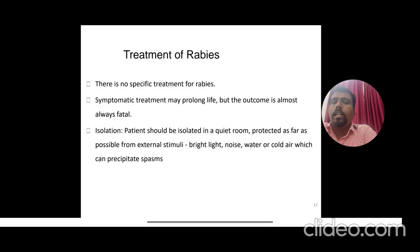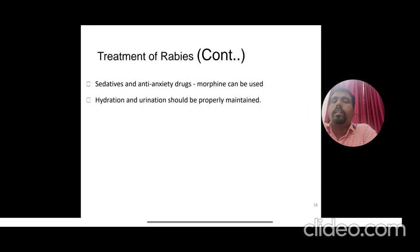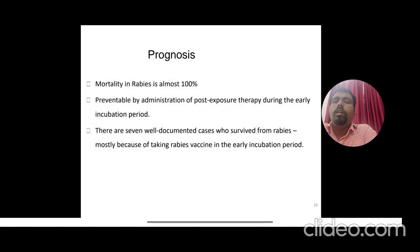There is no specific treatment for rabies. When a person is infected, only symptomatic treatment is possible to prolong life, but the outcome is almost always fatal. Patients should be isolated in a quiet room and protected from external stimuli such as bright light, noise, water, or cold air, which can precipitate muscle spasms. Sedatives, anti-anxiety drugs, and morphine can be given. Hydration and nutrition should be properly maintained. The mortality rate is almost 100%. Rabies is preventable by post-exposure therapy during the early incubation period; there are seven well-documented cases of survival attributed to early intervention.